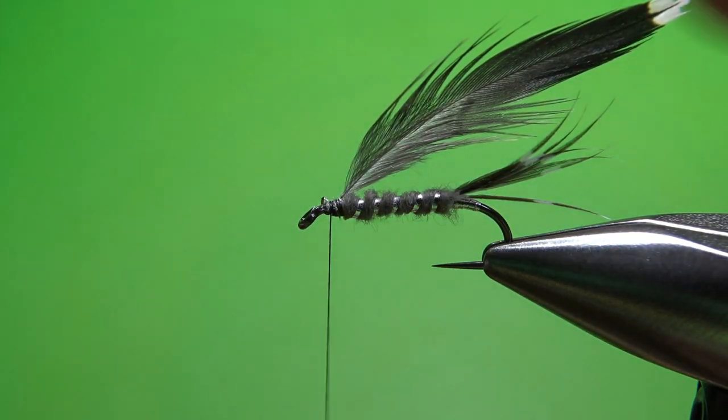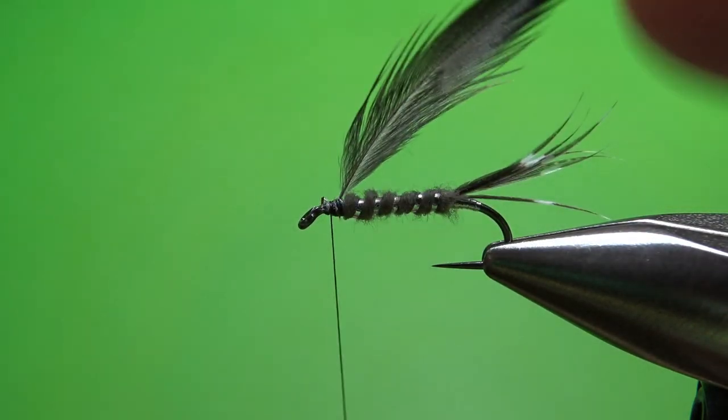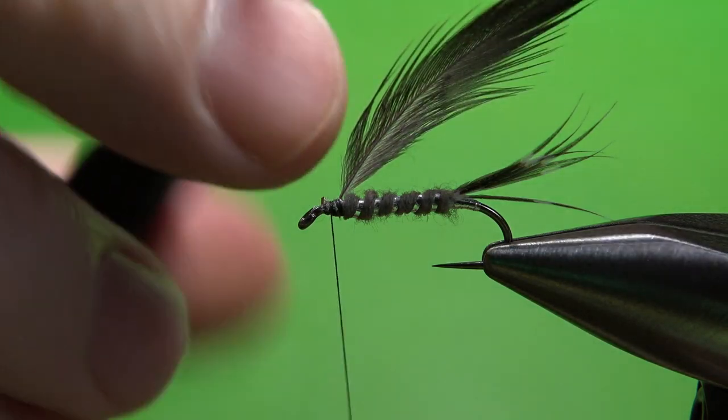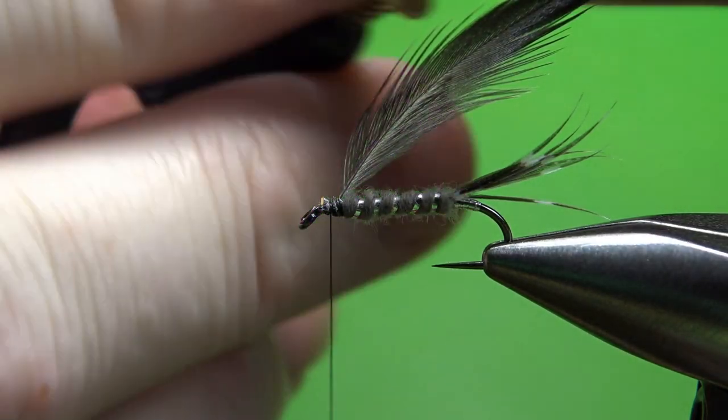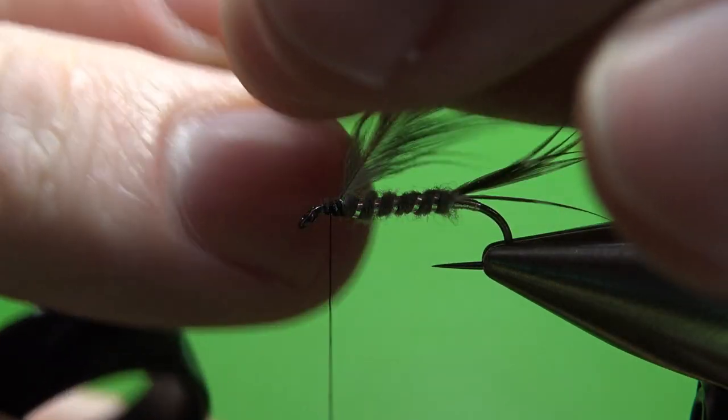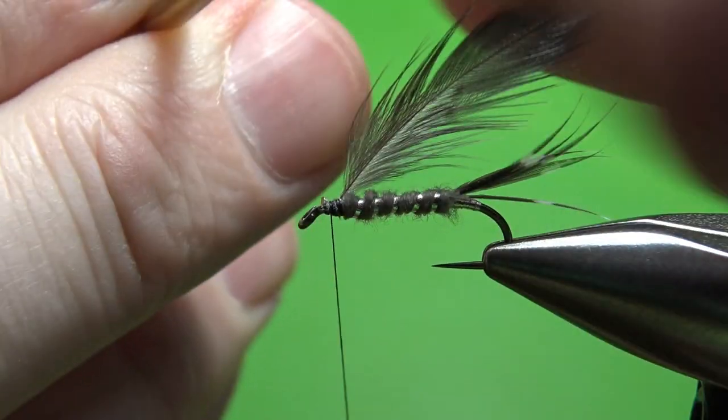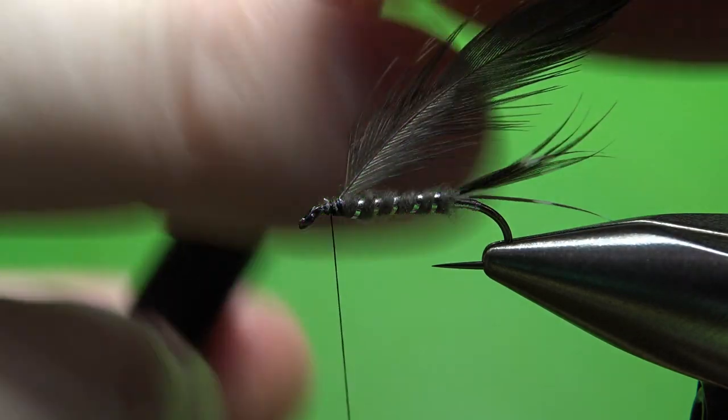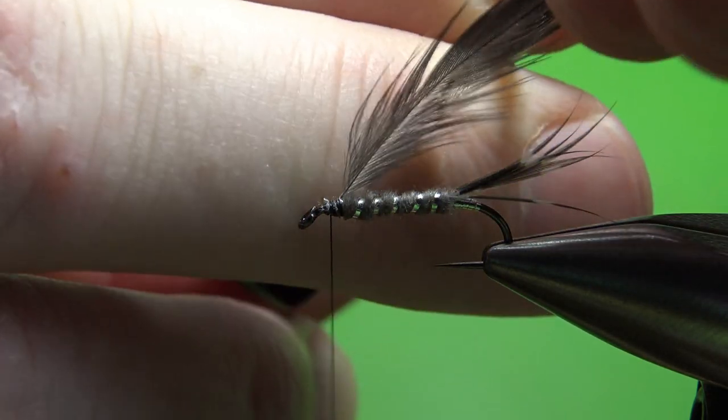Now let's just wrap this. Two or three turns will give you plenty. I'm using this new Stonfo hackle pliers right here. These are pretty nifty and they do a pretty good job when you have the tiny, tiny little feathers like this. So you just catch it in like that.